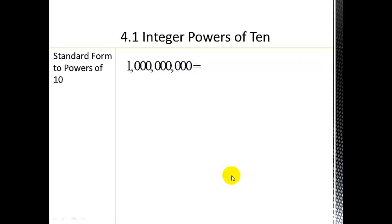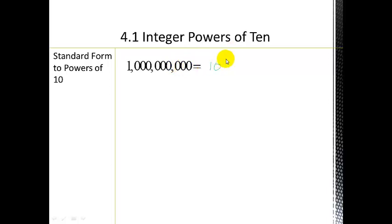Now let's go in reverse — mathematicians want to be efficient, so instead of writing huge numbers out, we abbreviate. I know it's a power of 10, so I count the zeros: 1, 2, 3, 4, 5, 6, 7, 8, 9. So this would be 10 to the 9th. You can verify: go 1, 2, 3, 4, 5, 6, 7, 8, 9 to get to the 1.